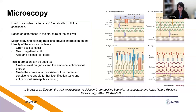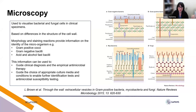Gram-negative compared to gram-positive — the gram staining technique has been in existence for a very long time. It's based on key structural differences between gram-positive and gram-negative bacteria. Gram-positive organisms like staphylococci have a thick peptidoglycan cell wall, which helps retain stains when exposed to them. Gram-negative bacteria like E. coli have a much thinner wall and an additional outer membrane, so they lose stains quite quickly but will take up counter stains.